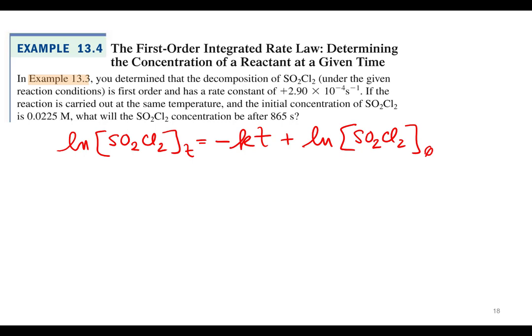Alright, and so in this problem we've got the rate constant 2.9 times 10 to the negative 4. We're going to say if that reaction was carried out with initial concentration of 0.0225 molar, what will the concentration be after 865 seconds? So what are we looking for? Which variable? The first one, the concentration at time t? Yes, that's what we're looking for.